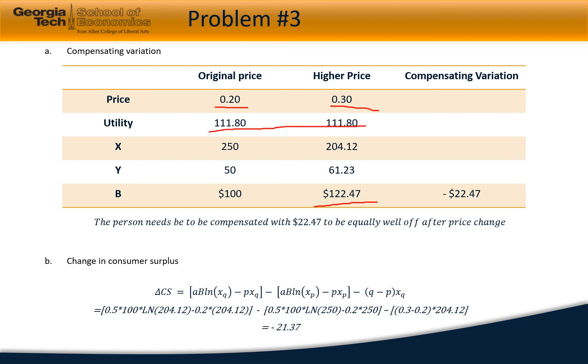Now the change in consumer surplus can be given by the equation below, and it comes out to be minus $21.37. This concludes the problems from Chapter 3. Thank you for your time and interest.